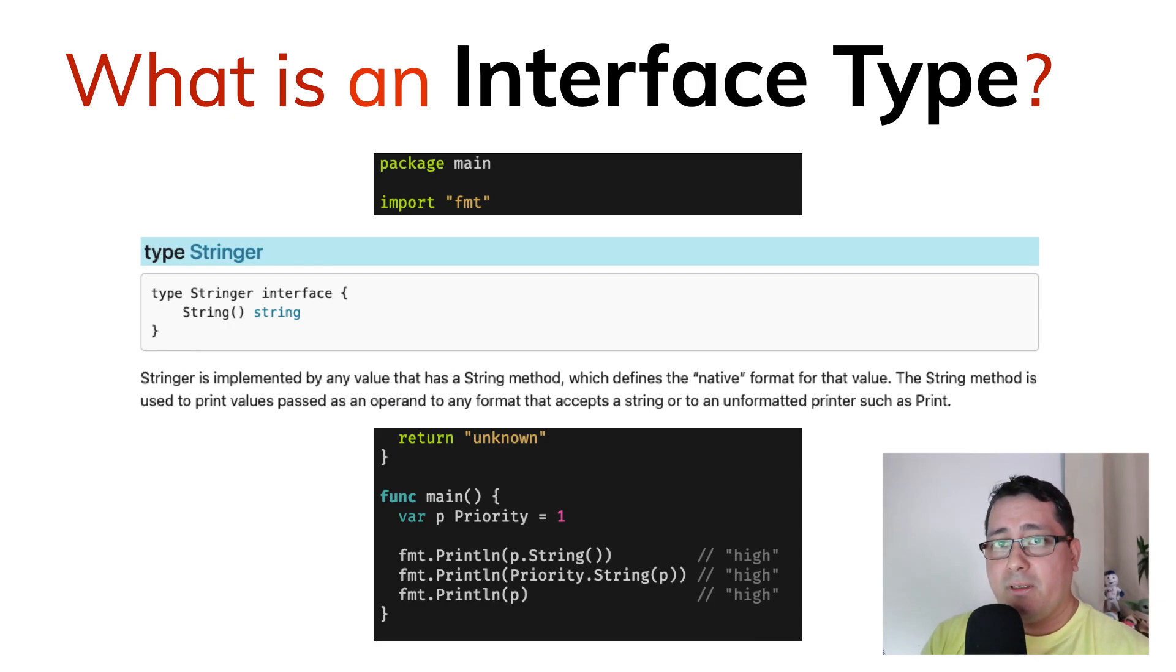And any type that implements this interface will be used, or rather, if the type implements that interface, that value that is returned by that type will be used as the result when calling print or println, depending on the configuration that we are having.